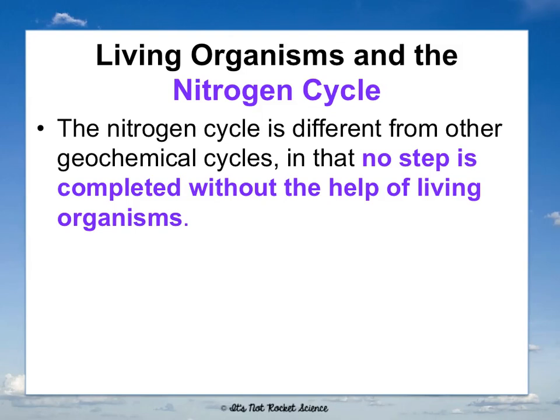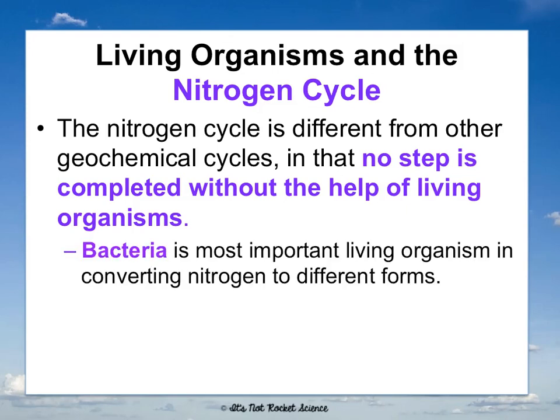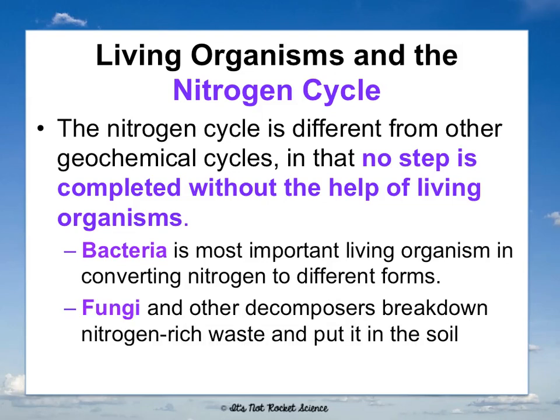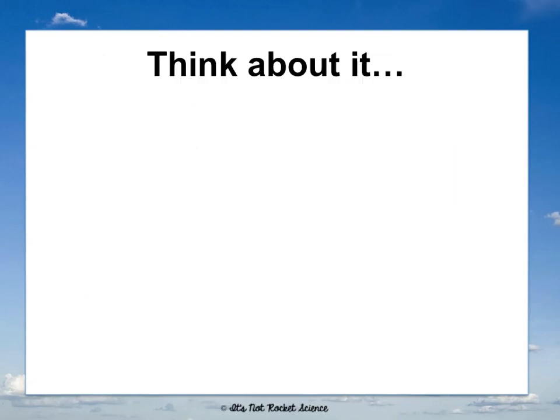The nitrogen cycle is really unique because no step can be completed without the help of living organisms. There are steps in other cycles that happen without living things, but not this one. Bacteria is the MVP — without bacteria this cycle could not happen. Fungi and other decomposers are also important, but bacteria is number one.